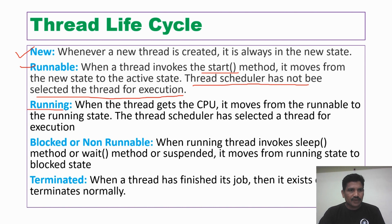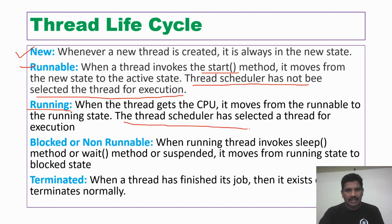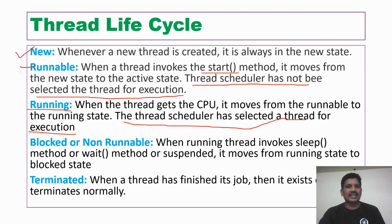When the thread switches from runnable state to running state: once the thread scheduler has selected the thread for execution, the thread switches from runnable state to running state. This means the thread invokes the run method and is then in the running state.